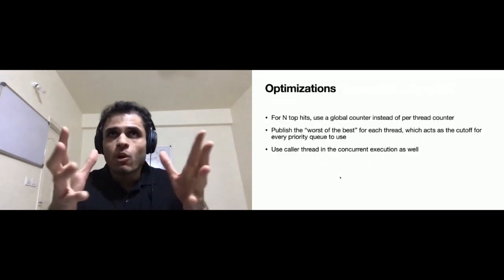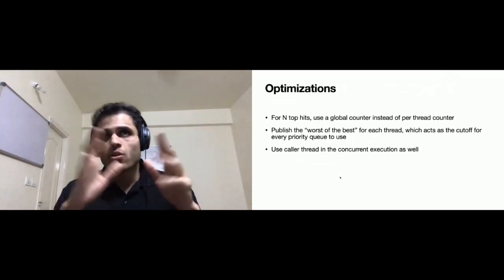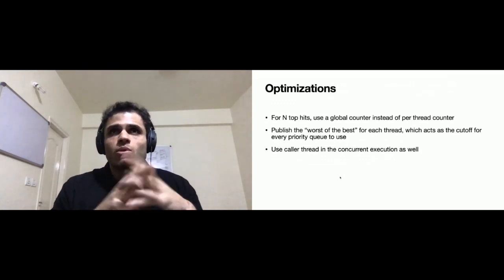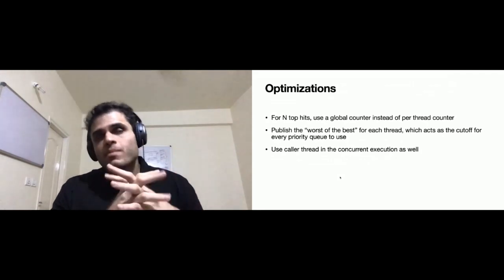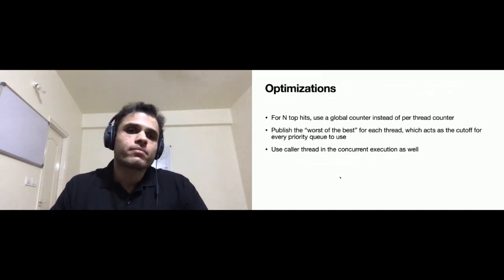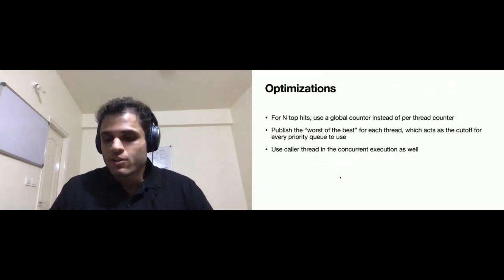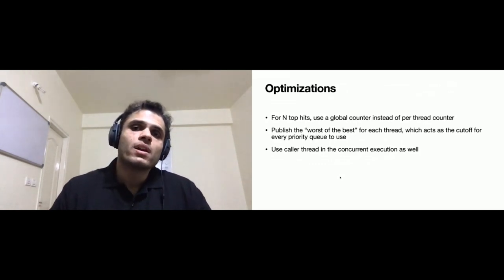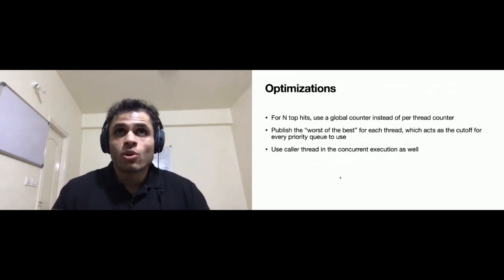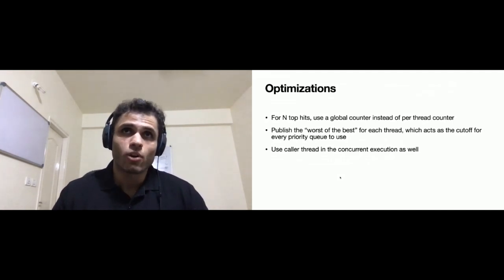What we've talked about is the basic model of concurrent search, which is not fully optimized. There have been and are ongoing optimizations. For example, if you only want to look at N documents globally, you can tell Lucene not to look at more than N documents. Earlier, concurrent search used to look at N documents per slice, but now there's a global counter where you only look at N documents globally across all threads. So the limit you set for document visibility is respected comprehensively and across all threads.